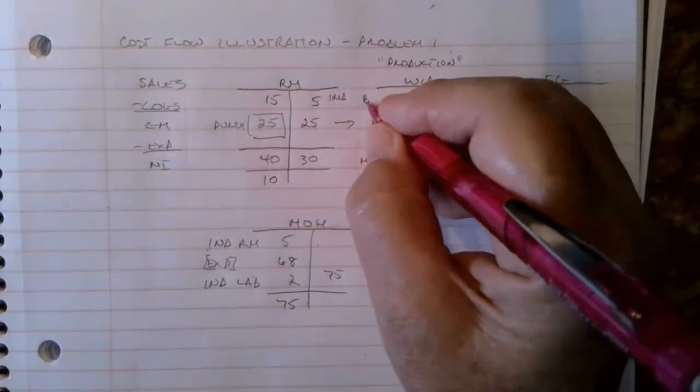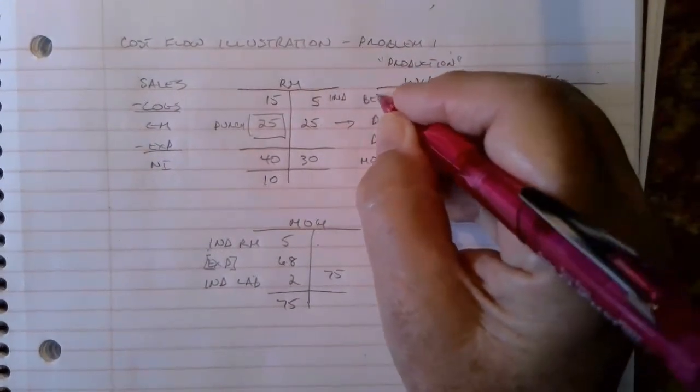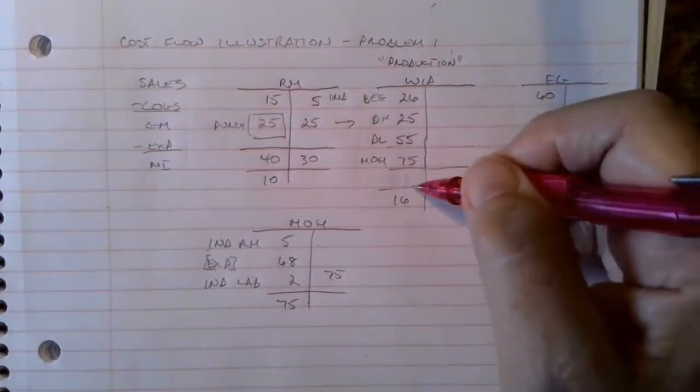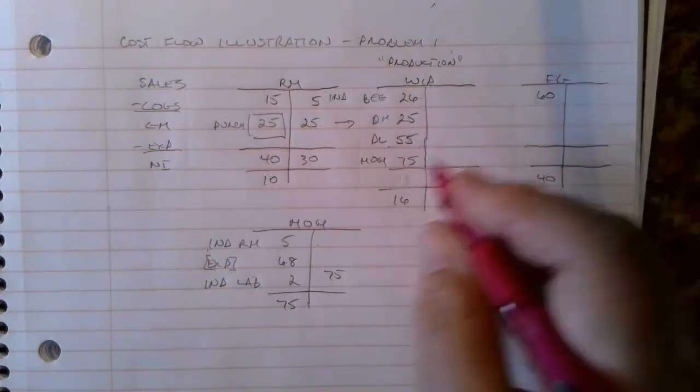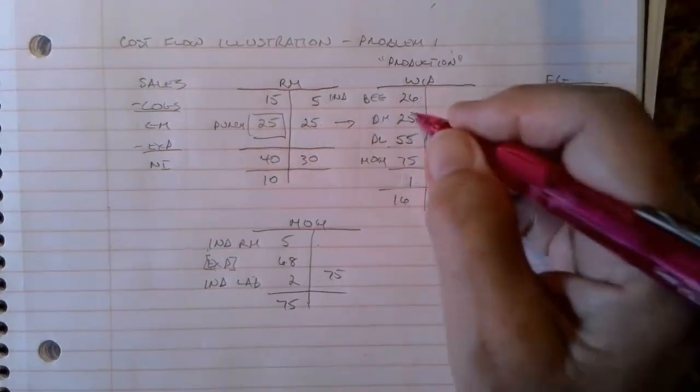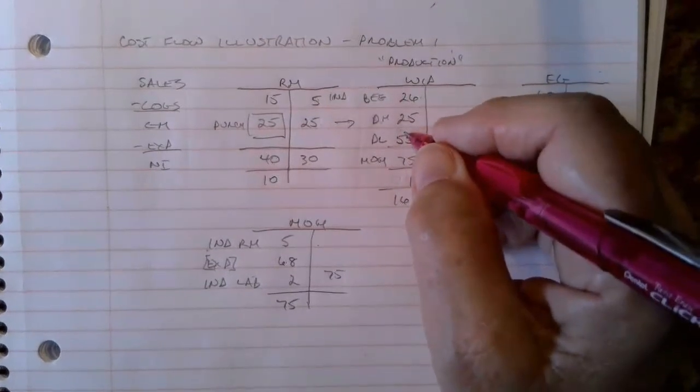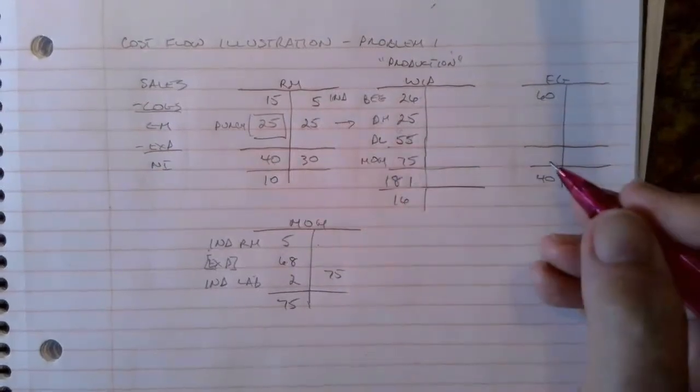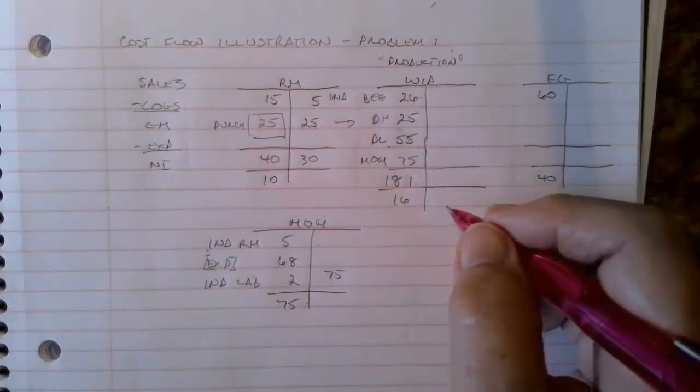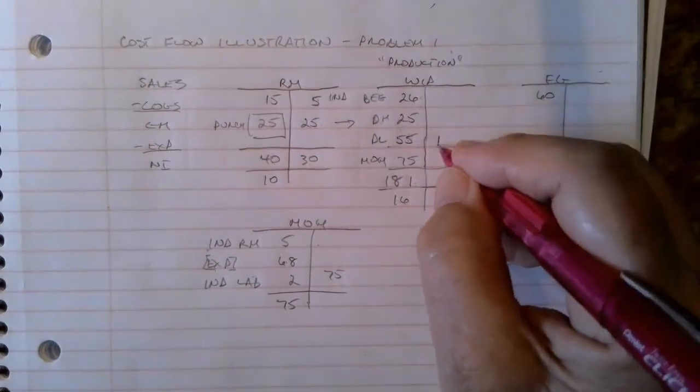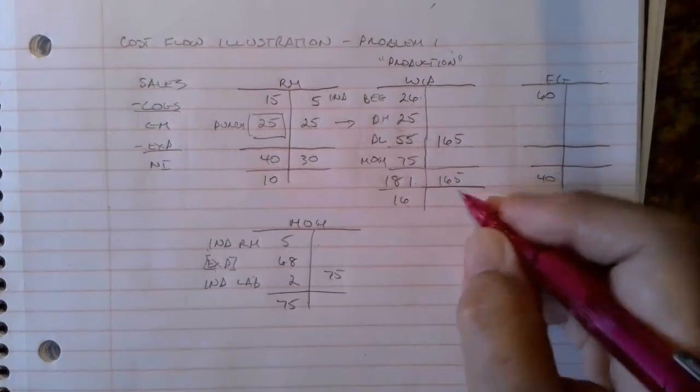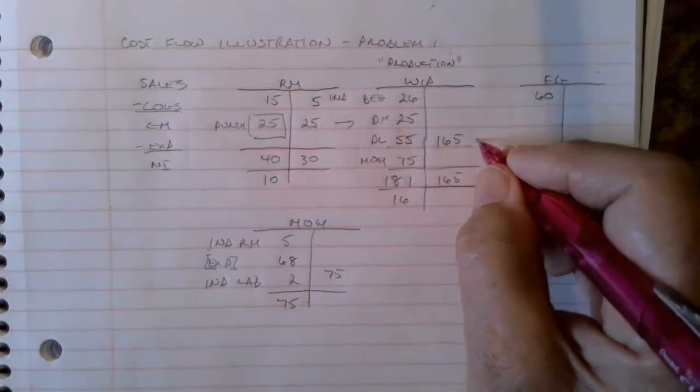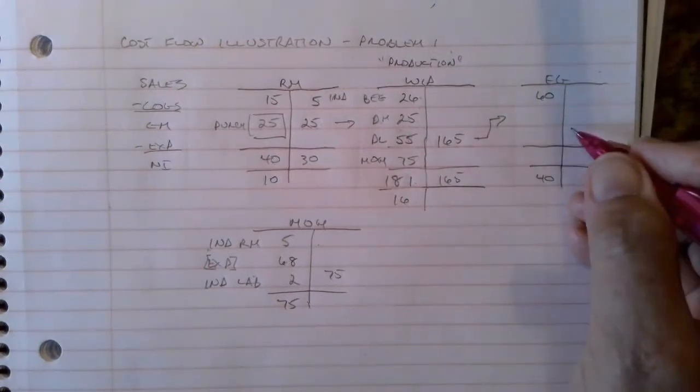So now work in process has a beginning balance. Then we add direct material, direct labor and overhead. So now I've got a total of one hundred eighty-one, minus sixteen. So what would have come out? One sixty-five, yeah. Sixteen plus one sixty-five is one eighty-one. One sixty-five would have moved over and gone into finished goods.